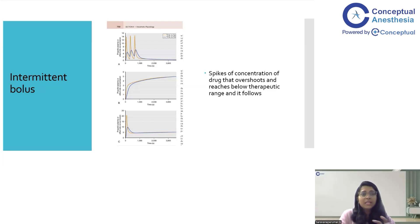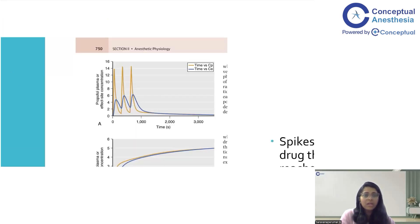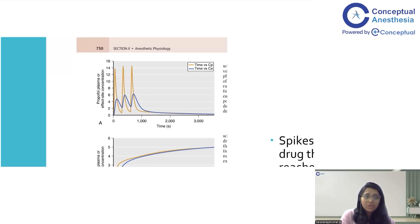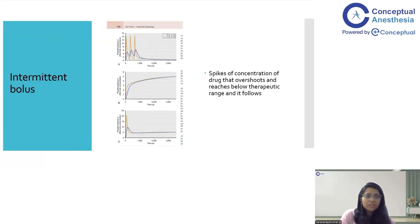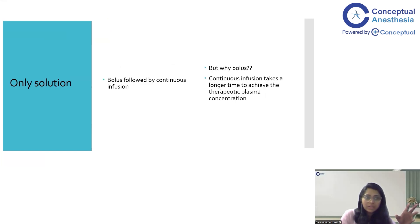What about intermittent boluses? As you can see on the graph — time on the x-axis versus drug concentration — when you give an intermittent bolus, the concentration spikes each time but never reaches a true steady state. There will be spikes that overshoot the therapeutic range, which can cause hemodynamic instability. Therefore, in order to achieve a complete therapeutic concentration, you need a bolus followed by a continuous infusion. That is the basic pharmacokinetic principle behind all TCA models.